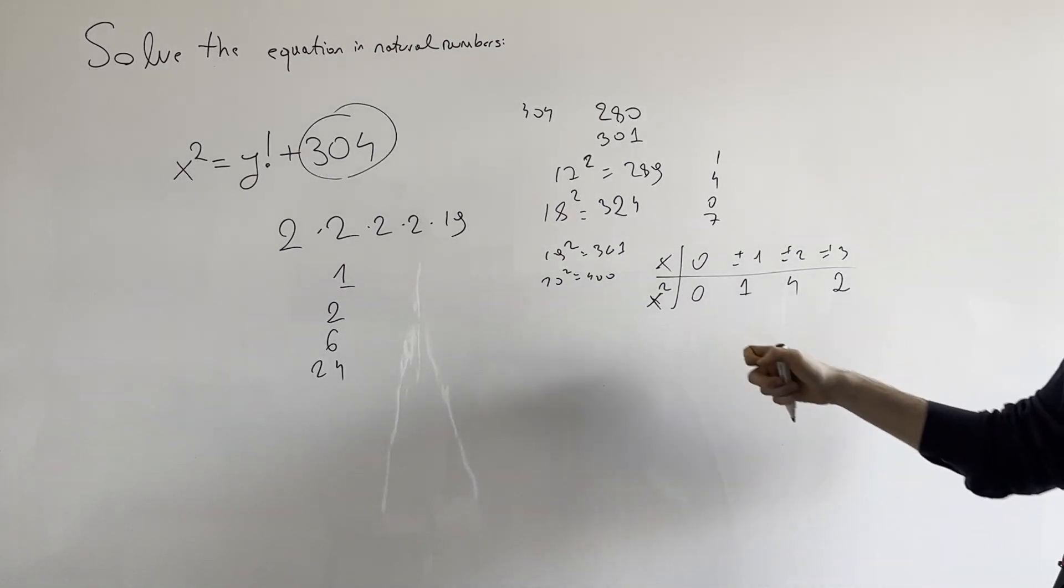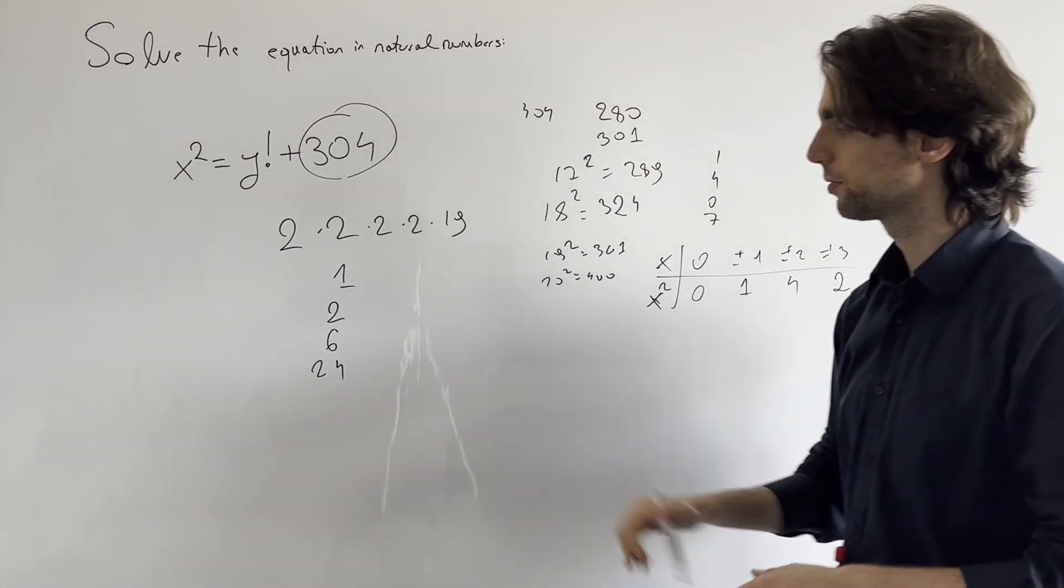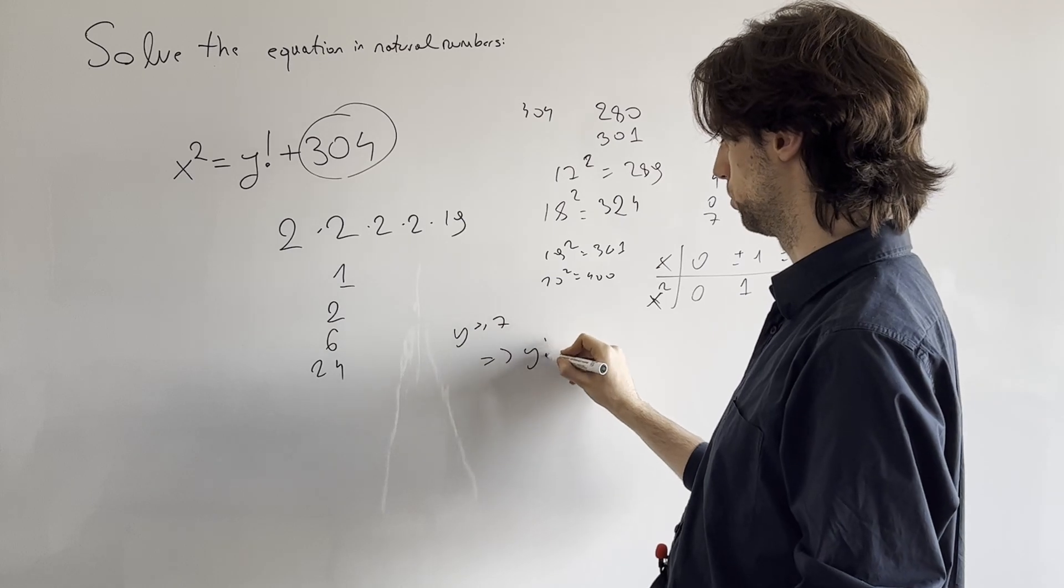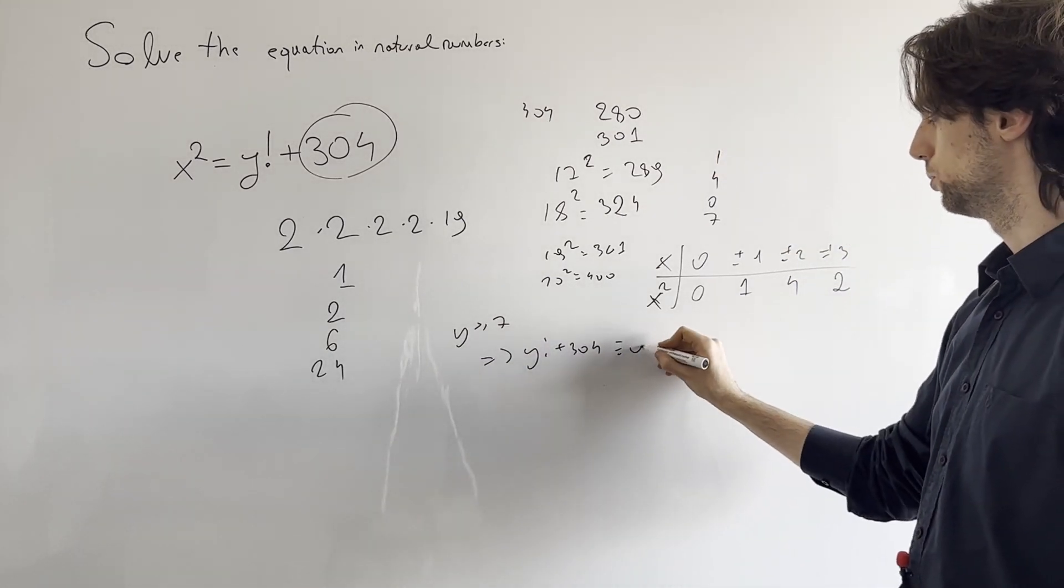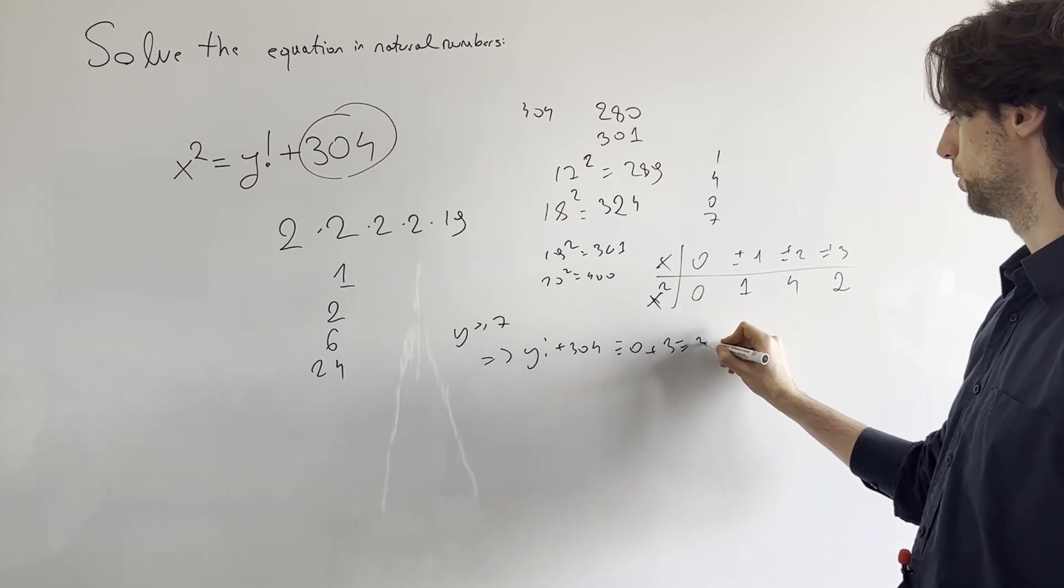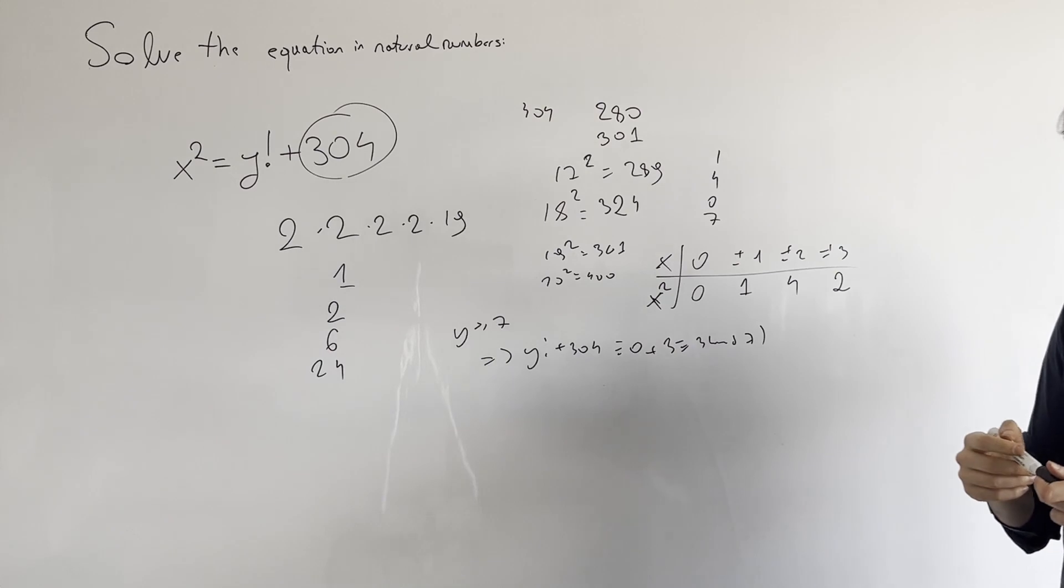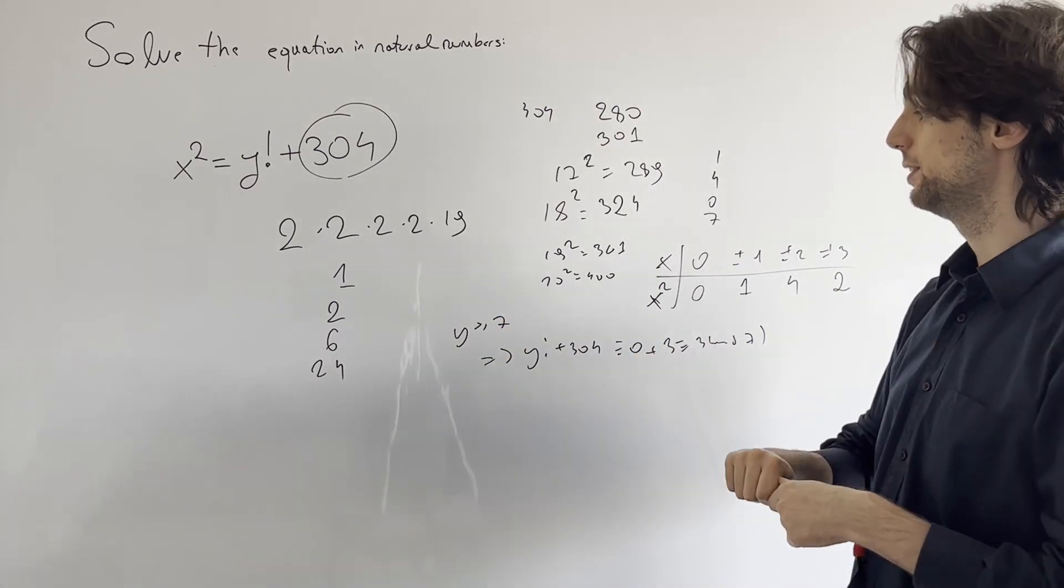x is either 0, 1, 4, or 2, and if y was greater than or equal to 7, we would have that y factorial plus 304 would be congruent to 0 plus 3, would be congruent to 3 modulo 7, which is not what x squared is going to be congruent to, so y greater than or equal to 7 doesn't work.